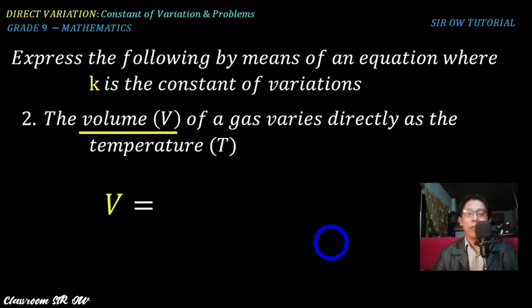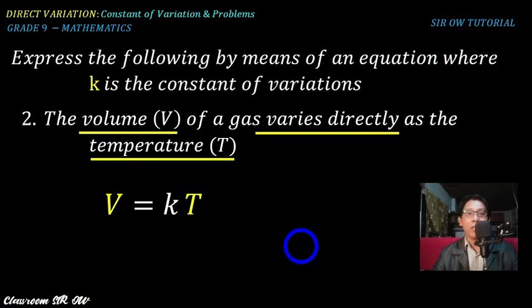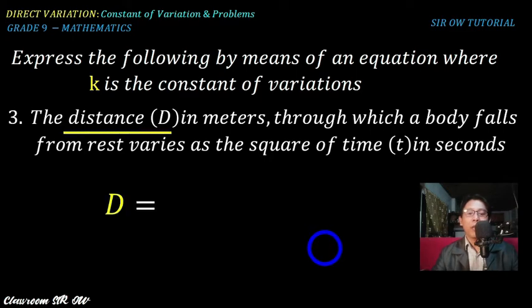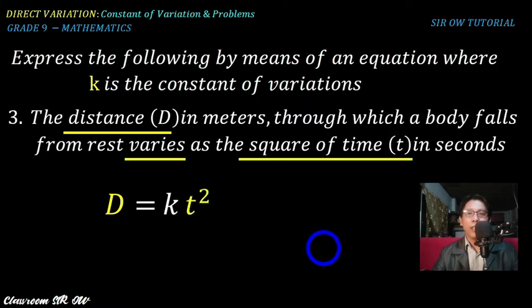Example three: the distance d in meters through which a body falls from rest varies as the square of time t in seconds. So d varies as t squared — that is d = kt². Be careful with the word 'square,' as it means you raise t to the power of 2.